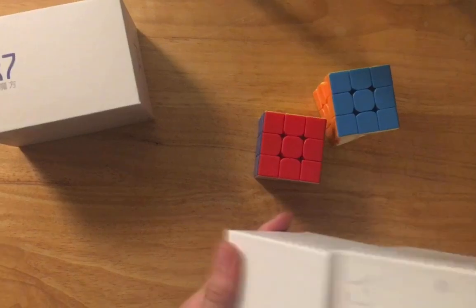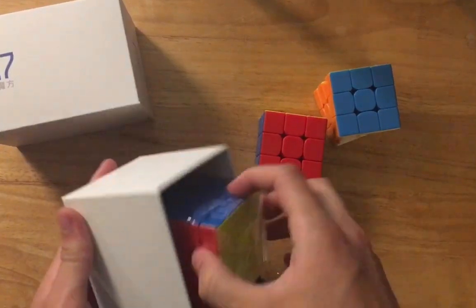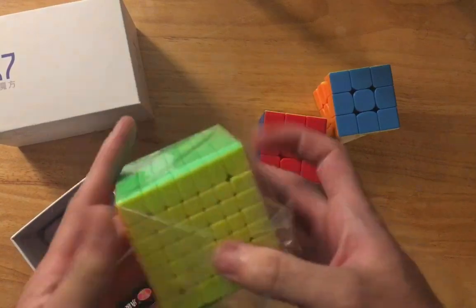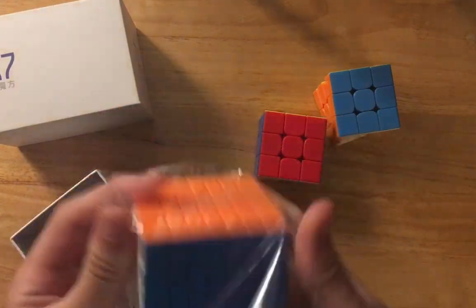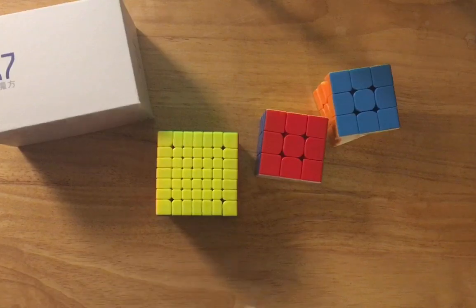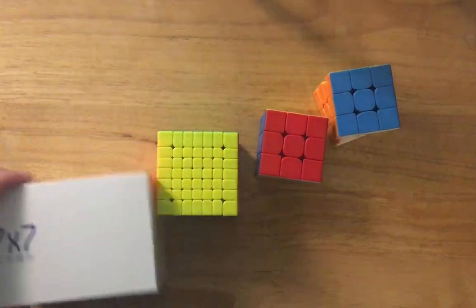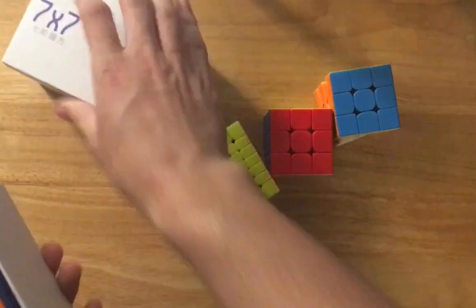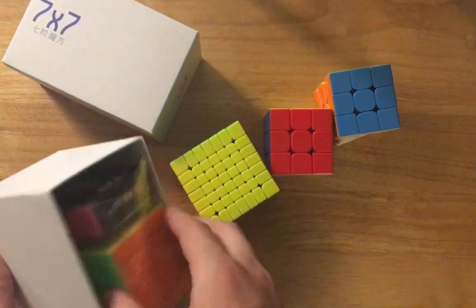This looks like the 7x7, that's interesting. It's all the same. Hopefully that means this would be the 6x6 in the 7x7 box. A little strange, but weirder things have happened.